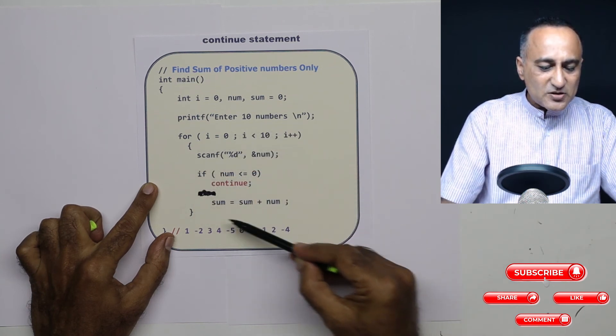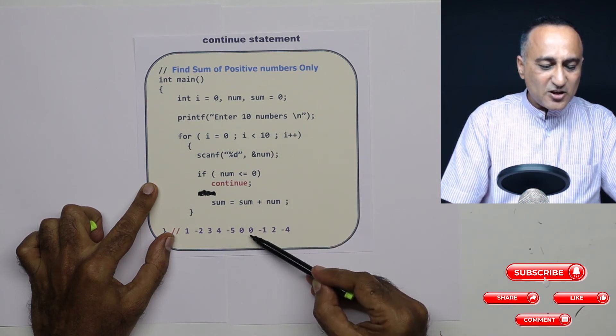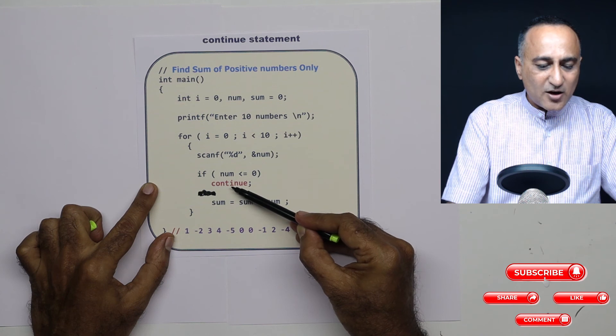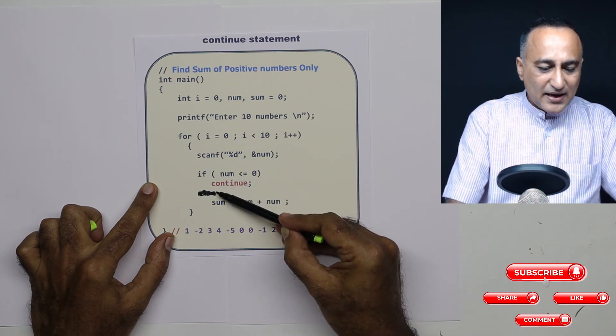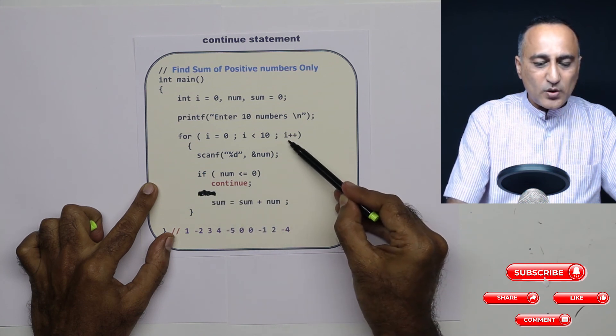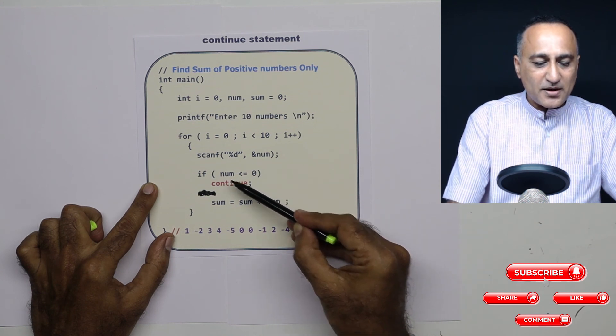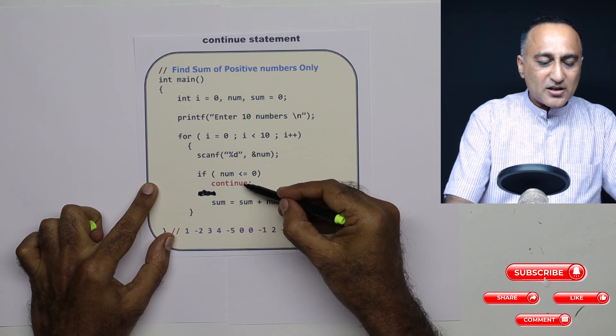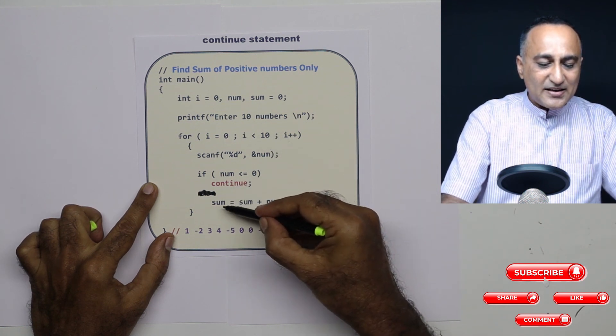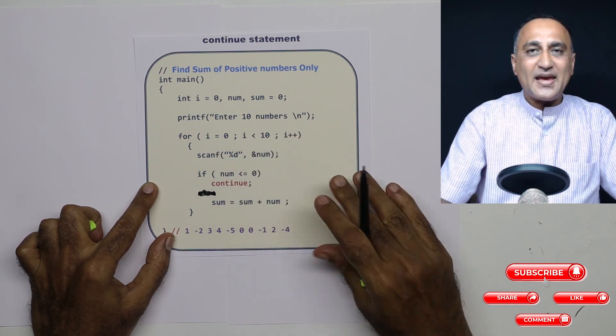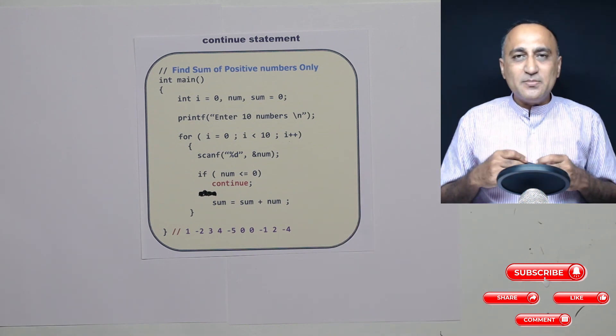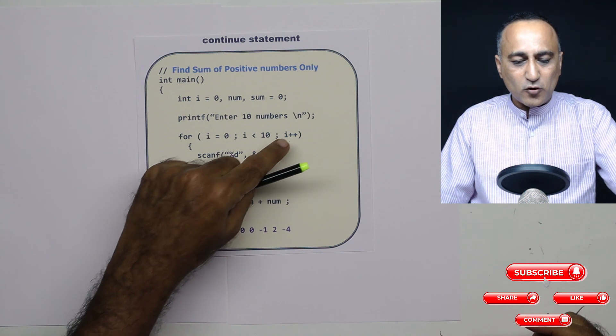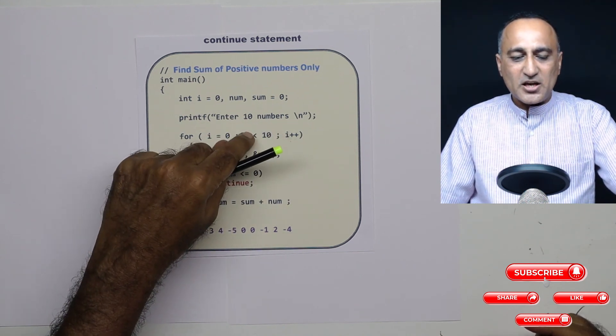So this will keep reading all the numbers, but it will see that negative and zero are not added to the sum that is achieved by the means of this continue statement. So wherever the continue statement is encountered based on a condition like this, when the condition becomes true, anything after the continue statement will not get executed and the control will directly go here. This is the job of a continue statement. Suppose I had put the continue without if, the sum would have always been zero, because the continue would have got executed for all the 10 times. And this statement sum is equal to sum plus number would never have got executed. In simple words, when a continue keyword is encountered, any instructions after the continue are not executed and the control goes to the point where the checking of the condition happens.